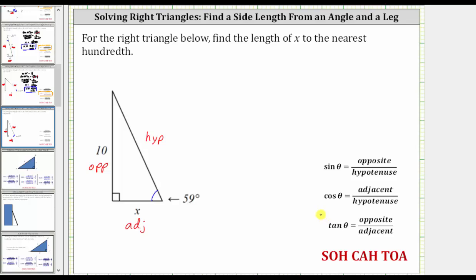Tangent theta is equal to the ratio of the length of the opposite side to the length of the adjacent side.